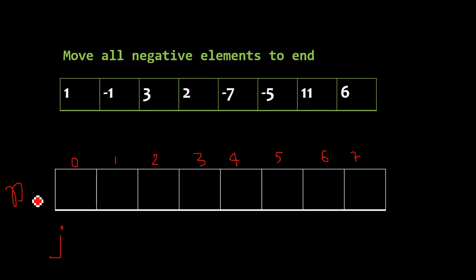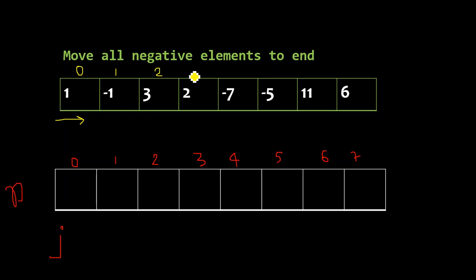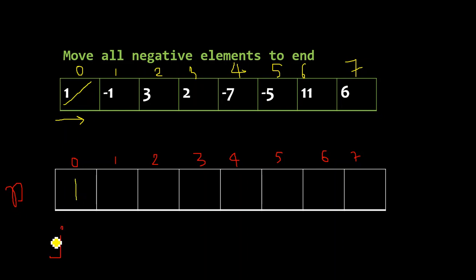I will traverse this array one time for all the positive numbers, updating j at the same time. Right now I am standing at the zeroth index - zero, one, two, three, four, five, six, seven. First we take element 1 - it is positive. Our first approach is to select all positive numbers and zero, then select all the negative numbers. So 1 is positive, so we select it and update j.